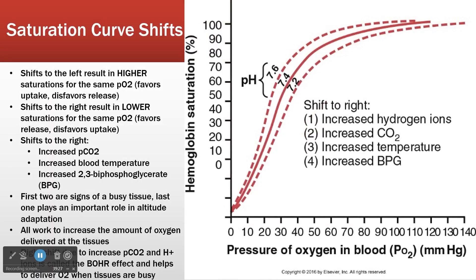Remember that the saturation curve is a characteristic of hemoglobin. Hemoglobin is a protein, so it has all kinds of molecular characteristics. Because of that, because it's determined by hemoglobin's characteristics, anything that affects hemoglobin can affect the saturation curve — in other words, can shift it to the right or to the left.